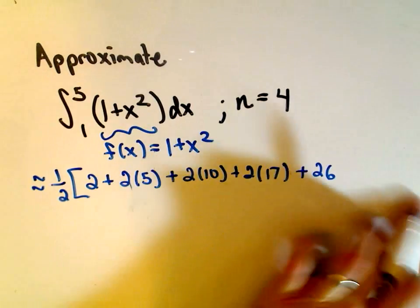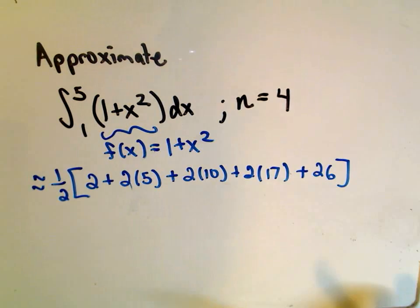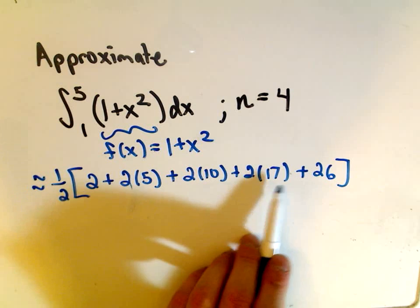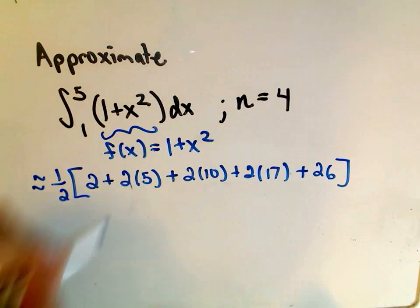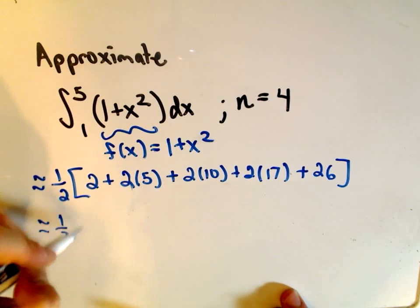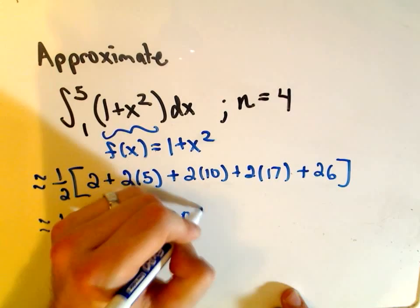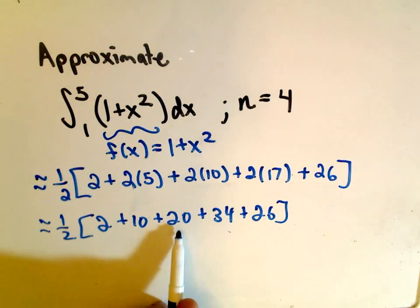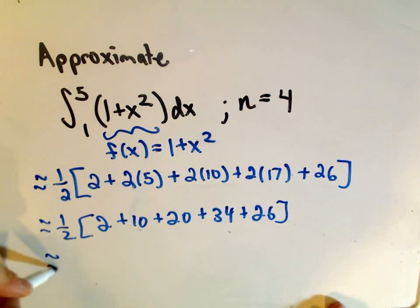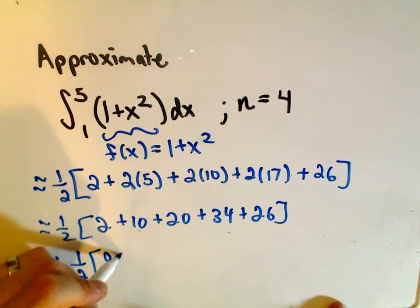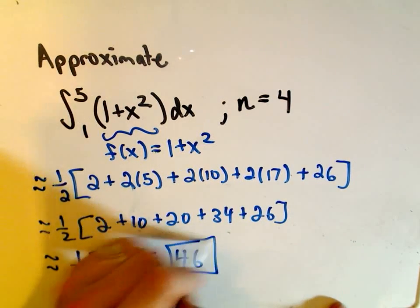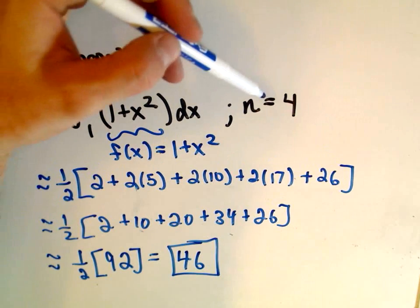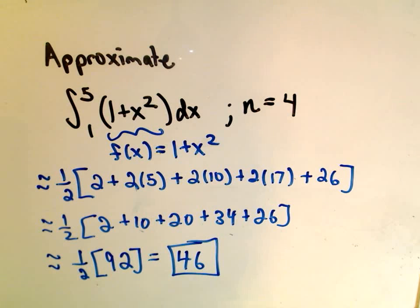And now we just have to add all of this stuff up. This was our f of 1 value, f of 2, f of 3, f of 4, and our f of 5 value. We're almost there. What do we get? So this is 10 plus 20 plus 34 plus 26. 34 and 26 is 60, plus 20 is 80, 90, 2. So it says we get 1 half of the value 92, which I do believe is the number 46. So it says the area underneath the curve, 1 plus x squared from 1 to 5, using 4 approximating trapezoids, would be roughly equal to the value 46.